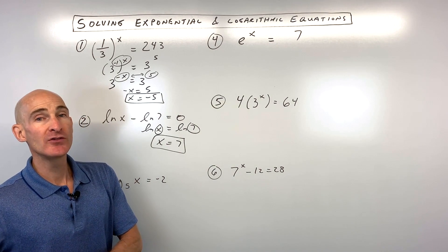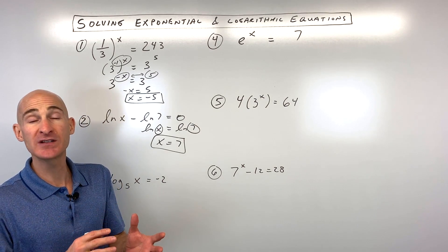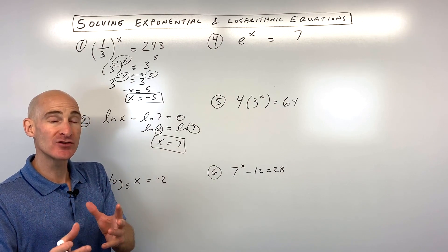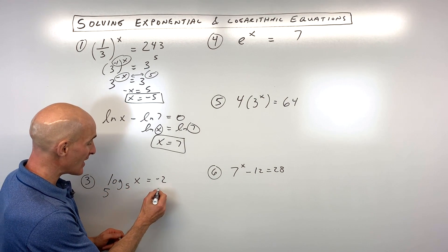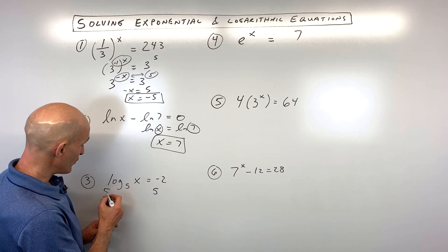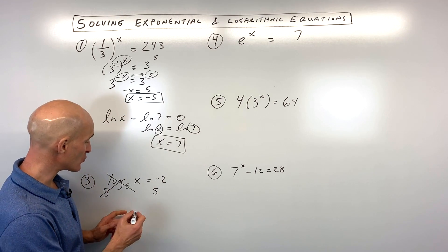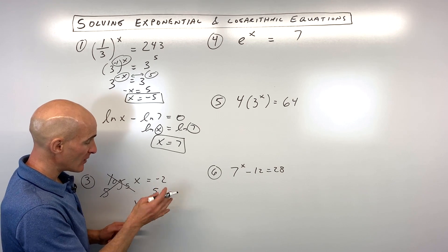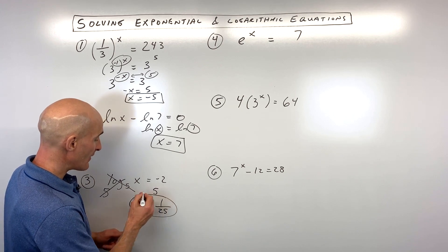An important skill is knowing how to switch from log form to exponential form and vice versa. I like to think of logs and exponential functions as inverses of one another. So if I'm taking the log base 5, I'm going to exponentiate both sides using base 5. These are inverses, so they cancel one another out — kind of like squaring and square rooting. 5 squared is 25, but because it's negative 2, we take the reciprocal, so that's 1 over 25.